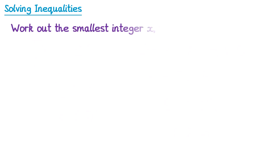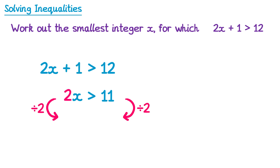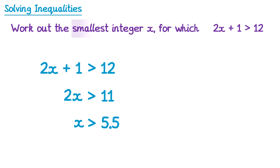Sometimes we might get worded questions like: work out the smallest integer x for which 2x plus 1 is greater than 12. First we solve the inequality: subtract 1 from both sides, giving 2x is greater than 11. Then divide both sides by 2, giving x is greater than 5.5. Now for this question we've been asked for the smallest integer for x. An integer is just a whole number, so we need whole numbers greater than 5.5 — for example 6, 7, 8, and so on. The question asks for the smallest one, so the answer is 6.